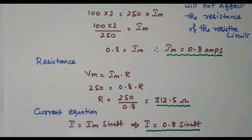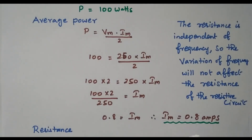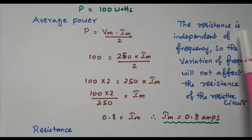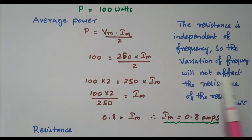The current equation is I = Im sin ωt = 0.8 sin ωt. Regarding frequency: for a resistive circuit, the resistance is independent of frequency. Both current and voltage are in phase, so variation in frequency will not affect the resistance value in a resistive circuit.